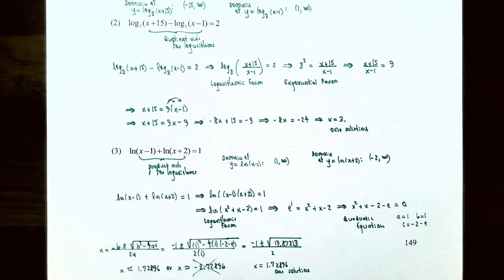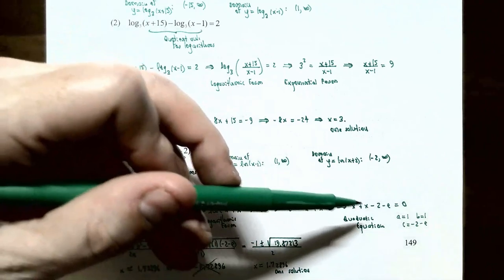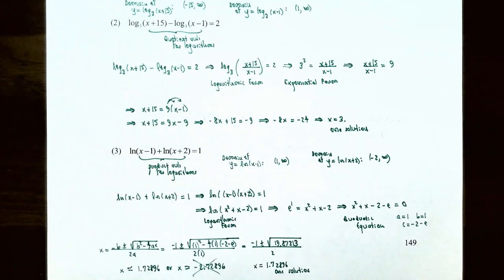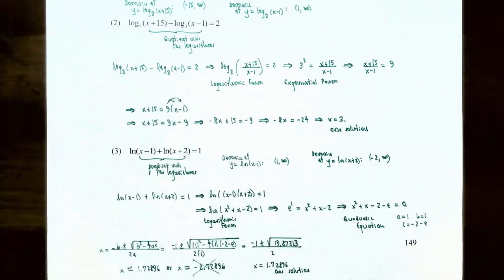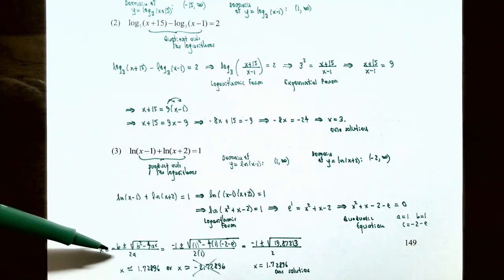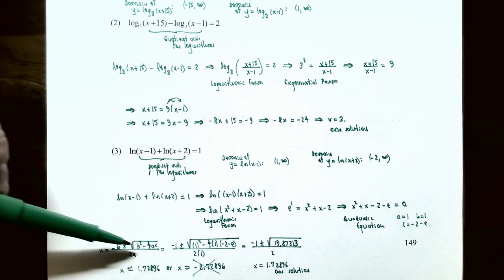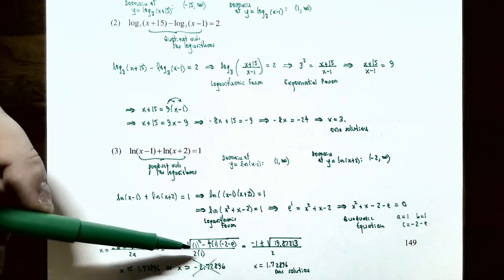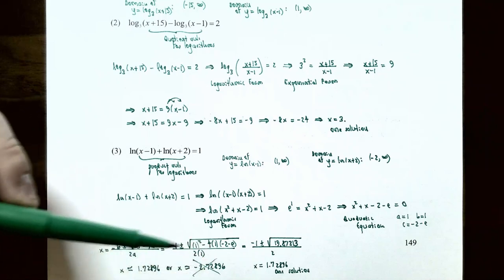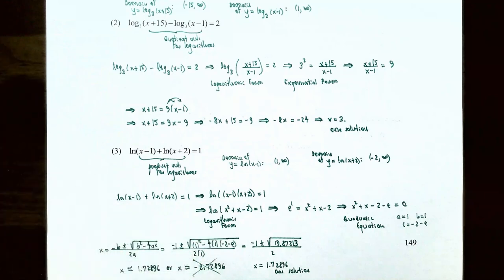Since this is a natural log (base e), raise e to each side: e¹ = x²+x−2. Moving all terms to one side gives x²+x−2−e = 0. Using the quadratic formula with a = 1, b = 1, c = −2−e, you get x = (−1 ± √(1−4(1)(−2−e))) / 2, which simplifies to x = (−1 ± √(9+4e)) / 2, approximately ±√19.873, giving x ≈ 1.729 or x ≈ −2.729.